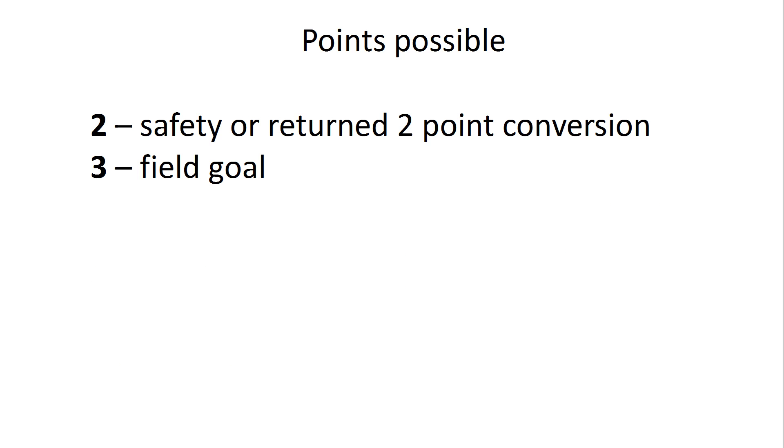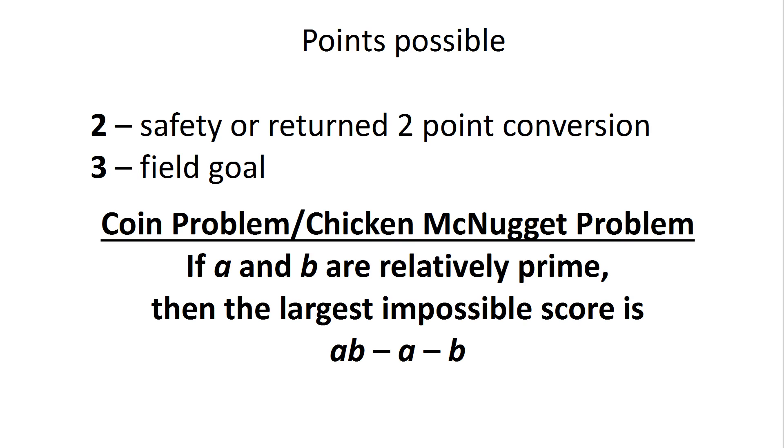And this is related to a mathematical problem. The coin problem or the chicken McNugget problem says that if A and B are whole numbers that are relatively prime, then the largest impossible score or the largest impossible denomination that you can get just by adding the values and multiples of those values is A times B minus A minus B. In the NFL problem, we have 2 and 3, which are relatively prime because their largest factor is 1. So the largest impossible score would be 2 times 3 minus 2 minus 3, which is 1.